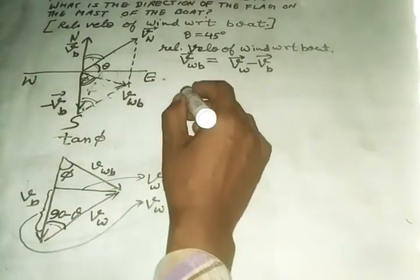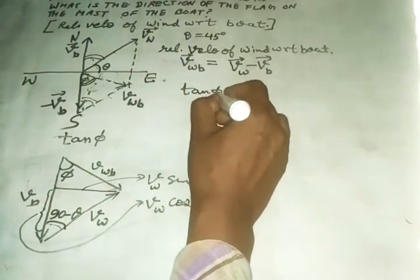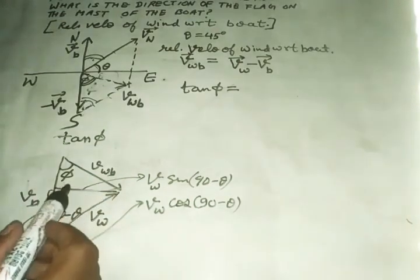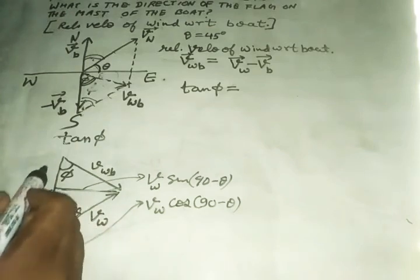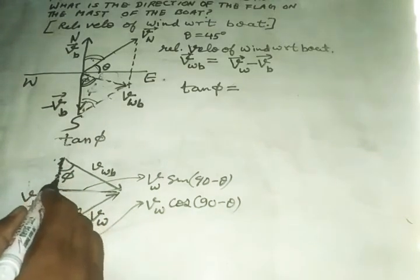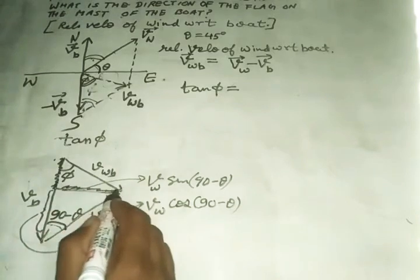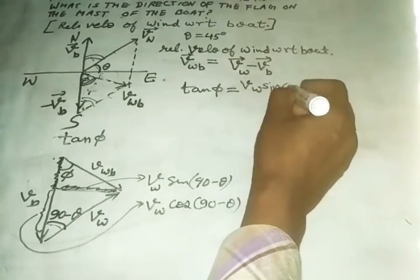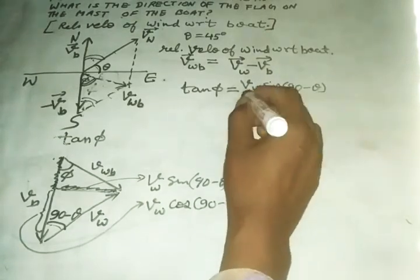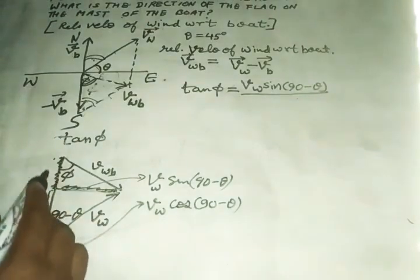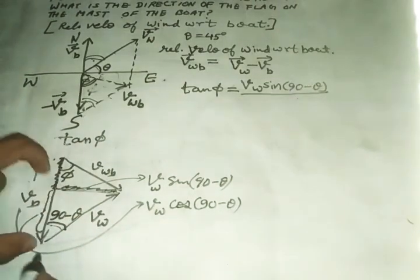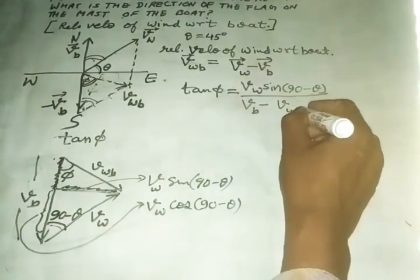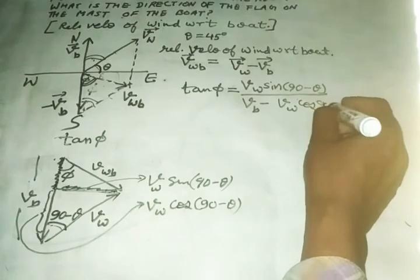So this is tan φ value, that will be equal to this. Look at this side, this is perpendicular and this is base, this is the opposite side. It's VW, so its value is VW sin(90-θ) upon this value, the full value may be VB minus, so VB minus VW cos(90-θ).